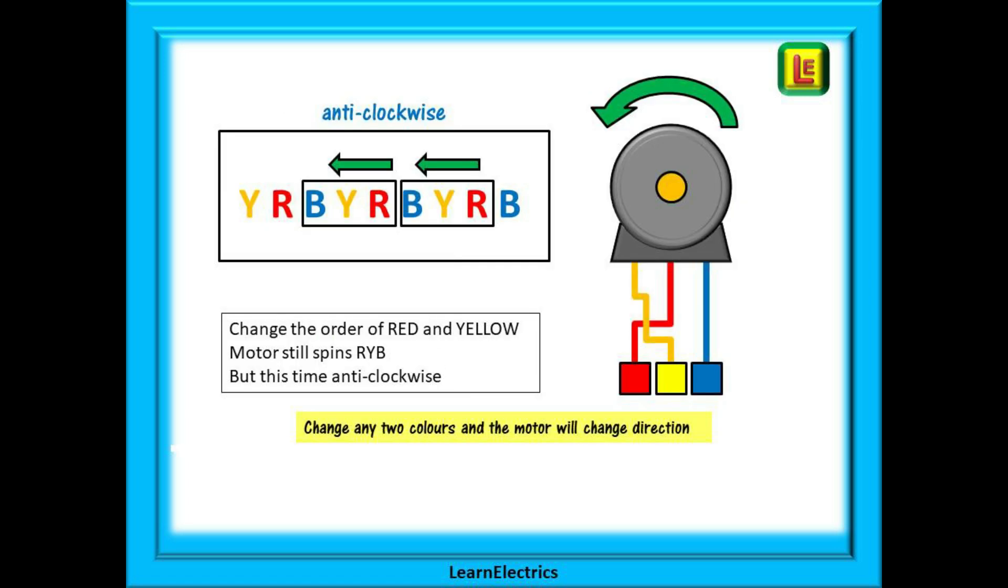If we swap any two phases, in this case the red and yellow, our order is now yellow, red, blue. But if we look closely at the diagram, what have we got? The sequence of red, yellow, blue is still there, but now it is from right to left, the opposite direction. The motor will still follow red, yellow, blue, red, yellow, blue, but now it rotates in the opposite direction. It rotates anti-clockwise. Swap any other two colors and it will change direction again. A very simple concept, remember it, it will make you look good on site.